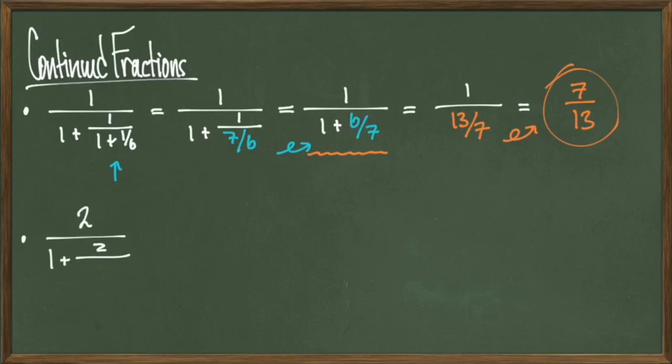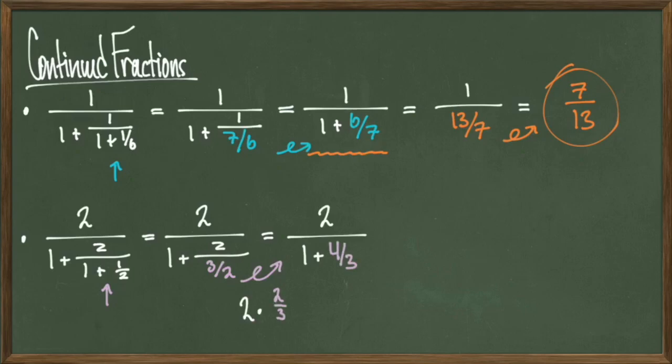Let's do another example. Consider this continued fraction. Our fraction stops at 1 plus 1 half, so we'll simplify 1 plus 1 half to 3 halves. This gives us the quantity 2 over 1 plus 2 over 3 halves. Now I need to take the 3 halves and flip it upside down and multiply it by 2. This action looks like this: 2 divided by 3 halves becomes 2 times 2 thirds, which becomes 4 thirds. Therefore, I simplify down to 2 over 1 plus 4 thirds.